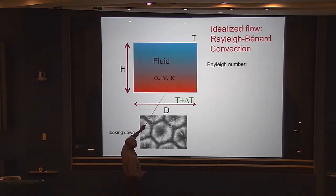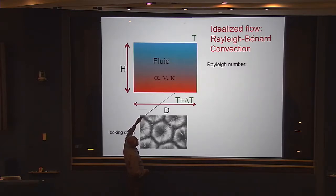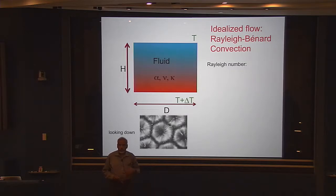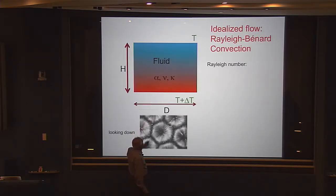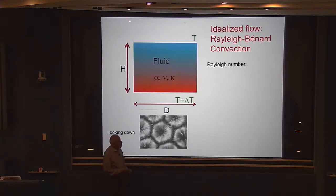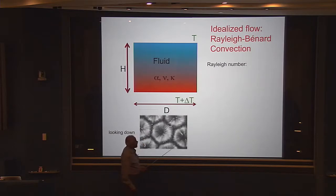One typical problem is to maintain a certain temperature difference and ask how much heat is capable of being transported from bottom to top. The fluid has a viscosity nu, thermal conductivity kappa, and thermal expansion coefficient alpha. How do I measure whether delta T is large or small?